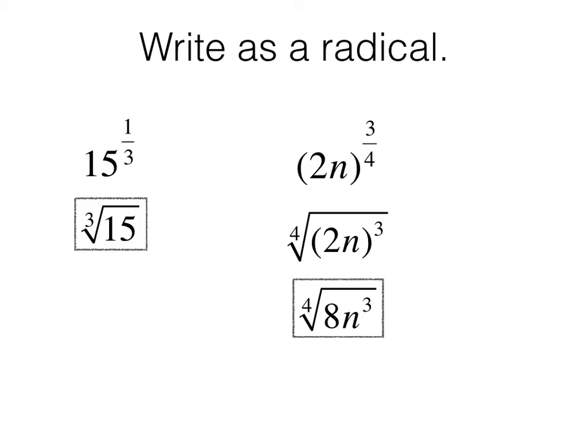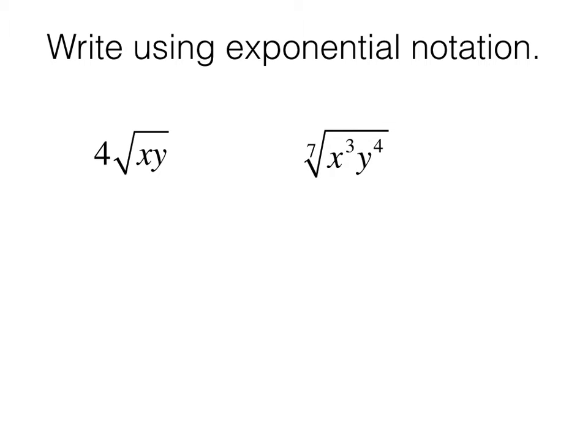In the next example, we'll give you radical notation, and we're asked to write using exponential. The square root is the 1/2 power, so this will be 4 times xy to the 1/2 power. So this is 4x to the 1/2, y to the 1/2.